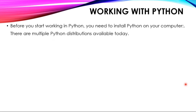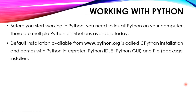Before you start working in Python, you need to first install Python on your computer. The default installation is available on the URL www.python.org. You can go to this website and download Python — whichever is the latest version of Python, you can download it.